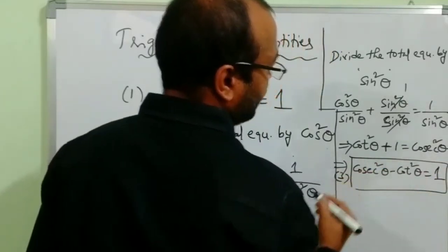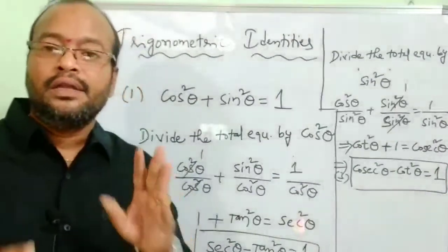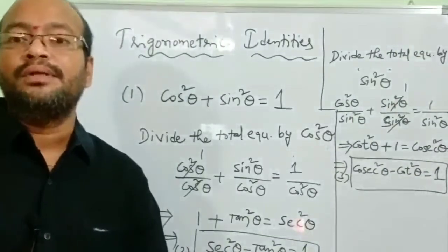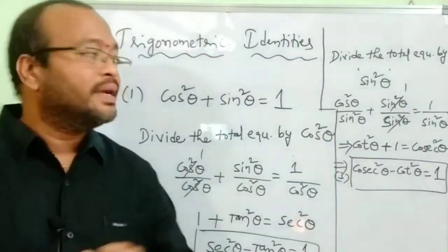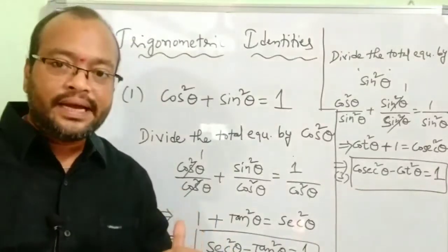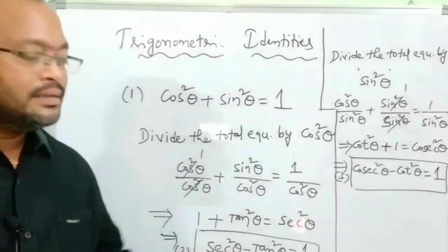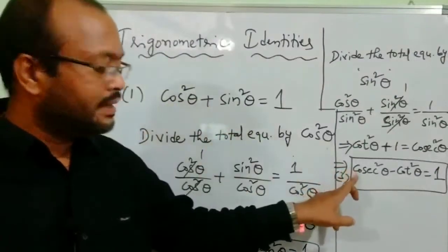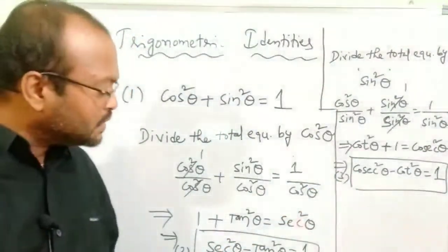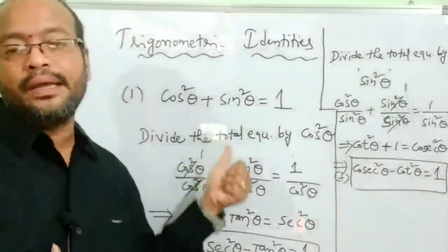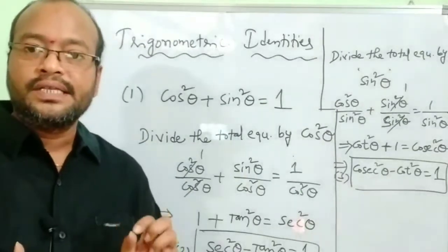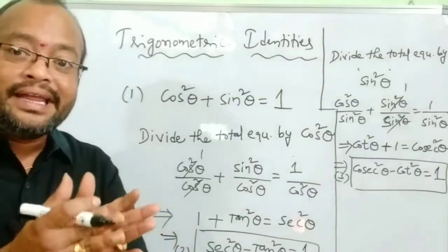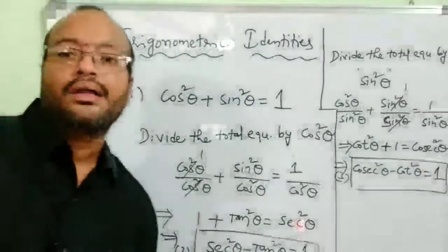This is our third identity. We have three identities — the total trigonometric chapter depends on these three identities. If we know these three identities perfectly, we can solve problems very easily. The first identity: cos²θ + sin²θ = 1. The second identity: sec²θ - tan²θ = 1. The third identity: cosec²θ - cot²θ = 1. Note: cosec and sec both start with 'c' and have minus signs, while the first identity has a plus. Remember carefully. These are why we call them trigonometric identities.